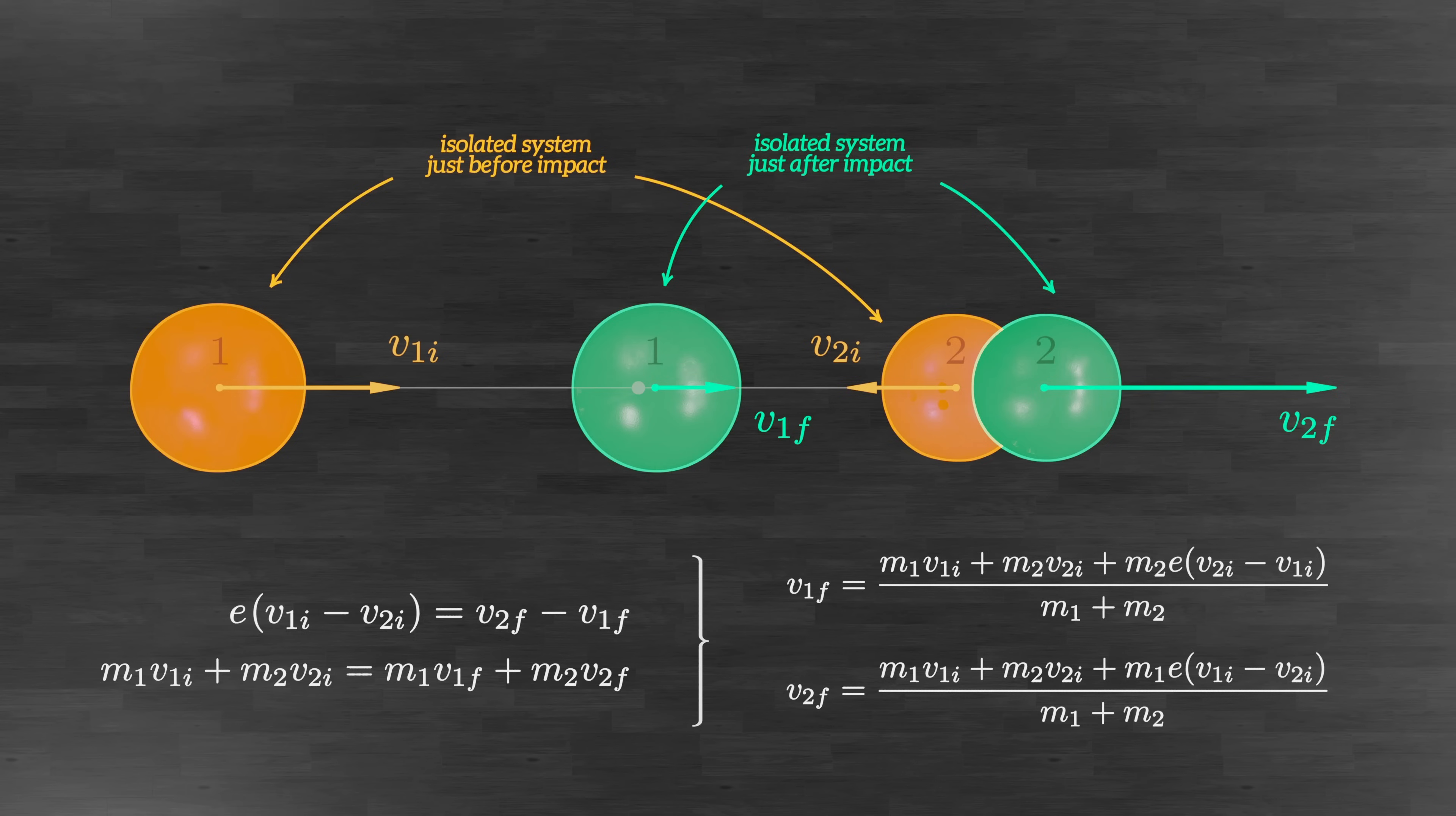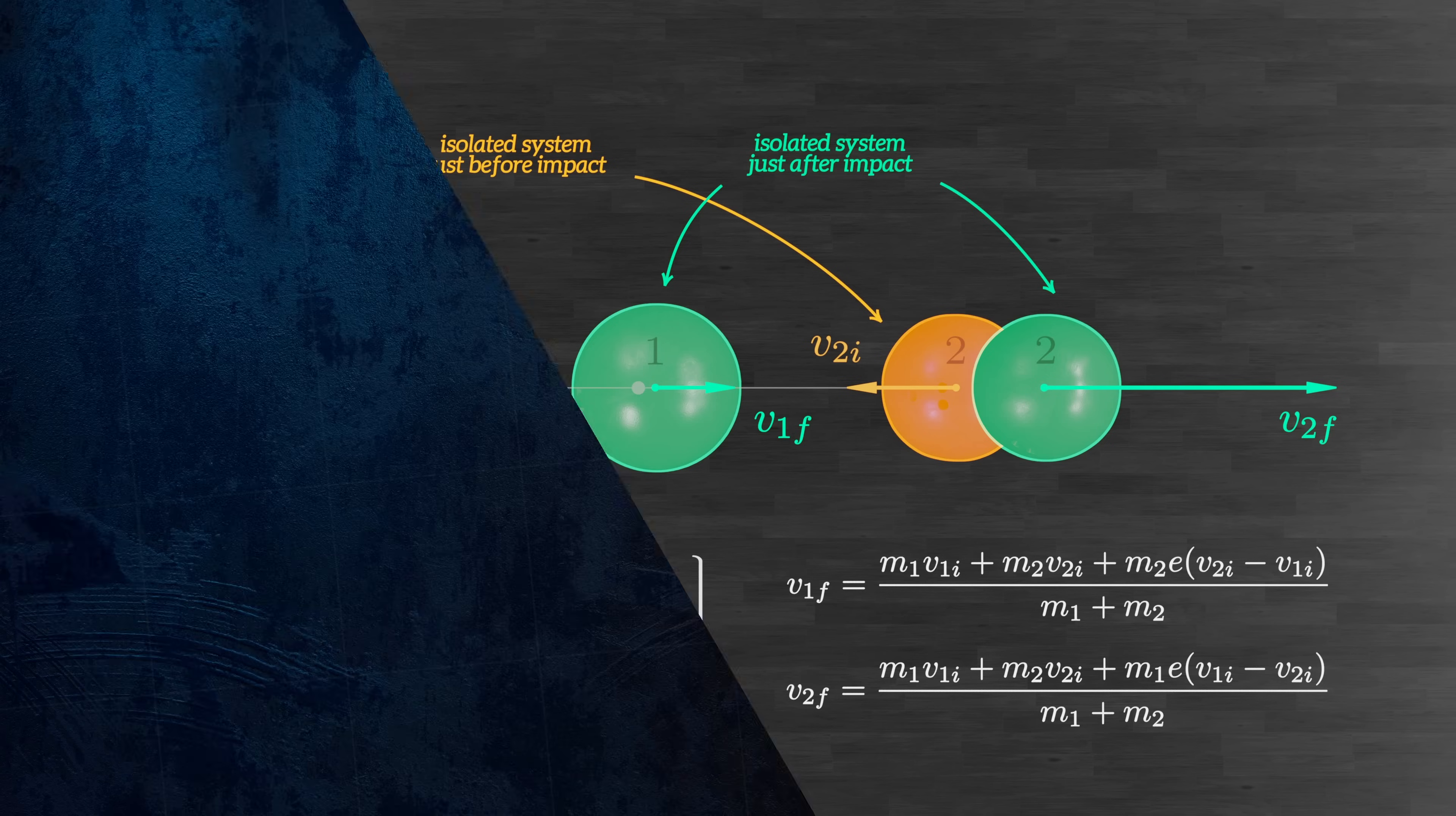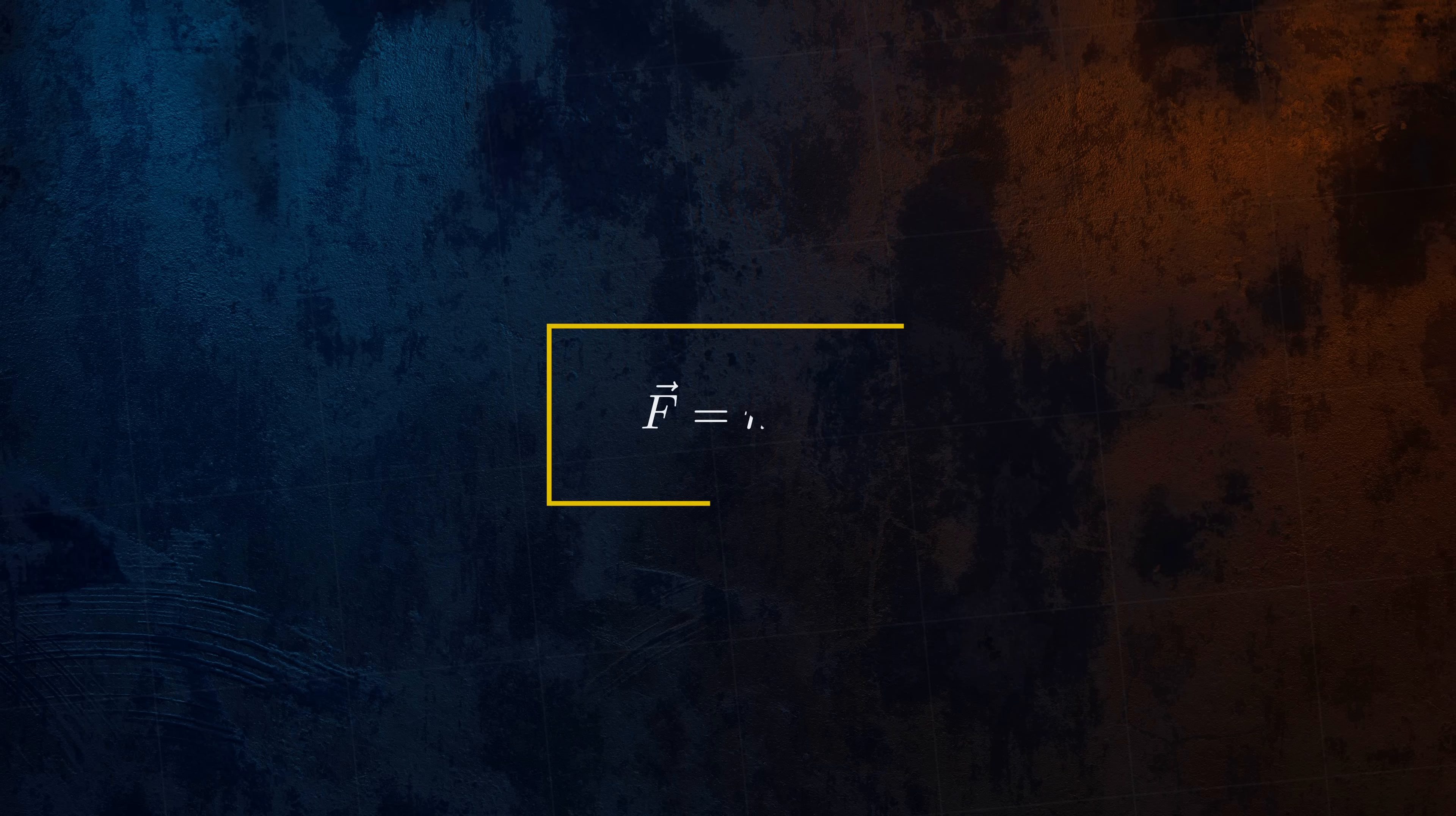Conservation of momentum is useful for analyzing the motion of isolated systems, but it doesn't tell us how forces acting on objects can cause their momentum to change. To understand the effect of forces, we need to turn to Newton's second law, which states that applying a force to an object causes it to accelerate in the direction of the force, with the acceleration depending on the mass of the object.